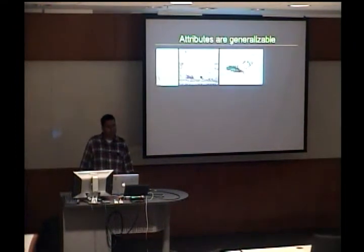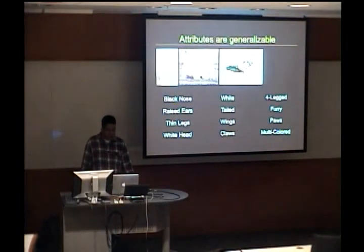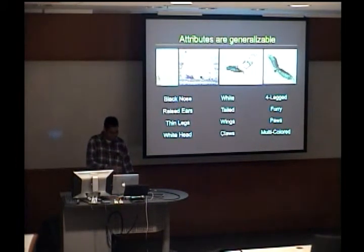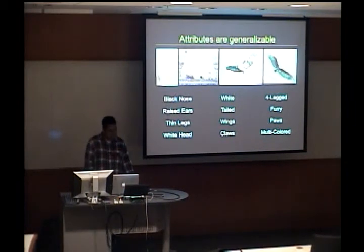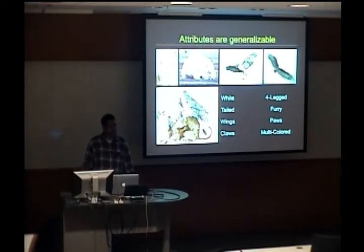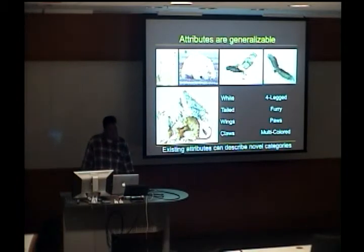One of the first benefits of attributes is that they're generalizable. If you have attributes for these three animals, now if you see a new animal you've never seen before — say a bald eagle — there are some attributes you've already used that can describe this new object. It's even better because you can look at a mythical animal like a griffin, and even though it doesn't exist and is so different from everything else, you can still find attributes that describe it because you're describing aspects of its appearance. So existing attributes can describe novel categories.